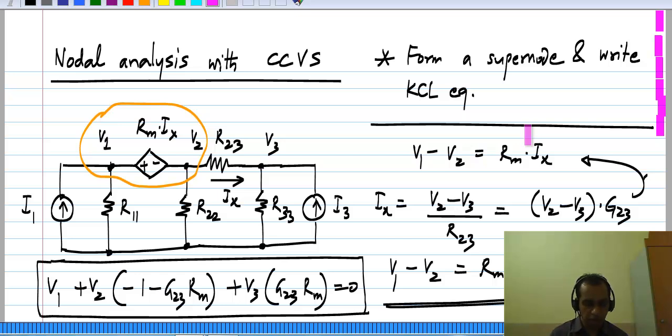So when the controlling current is flowing through a resistor whether you have a current control voltage source or a voltage control voltage source you analyze it similarly. Finally, you write the control voltage source in terms of these voltages V 2 and V 3 where I x is flowing in the resistor between V 2 and V 3. So that is what we will have for a current control voltage source.